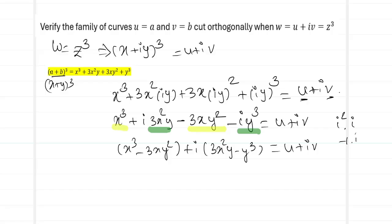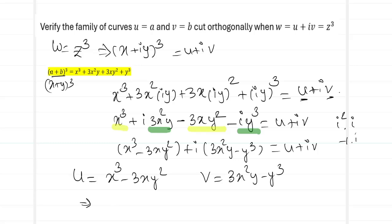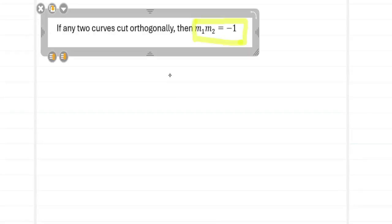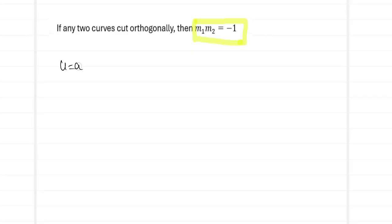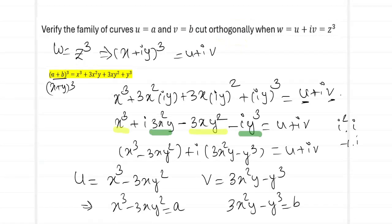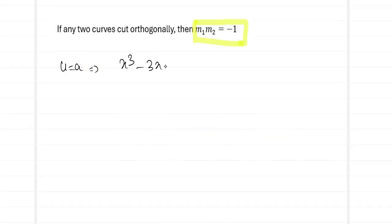So the two families of curves are: u = a, i.e., x³ − 3xy² = a, and v = b, i.e., 3x²y − y³ = b. We need to show these cut orthogonally, meaning the product of their slopes m1·m2 = −1. The first slope m1 = dy/dx comes from differentiating x³ − 3xy² = a with respect to x.